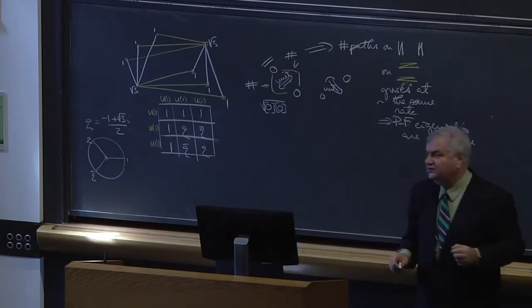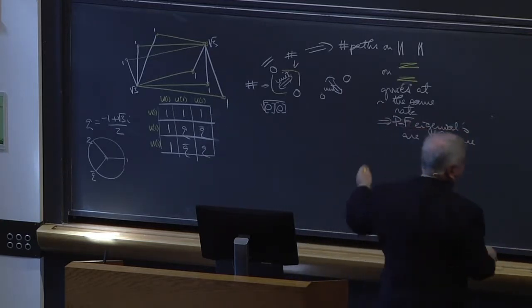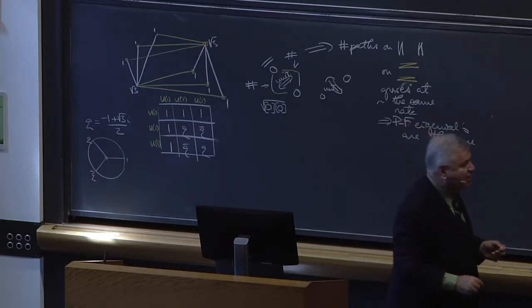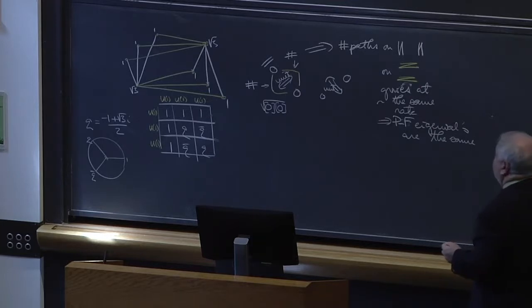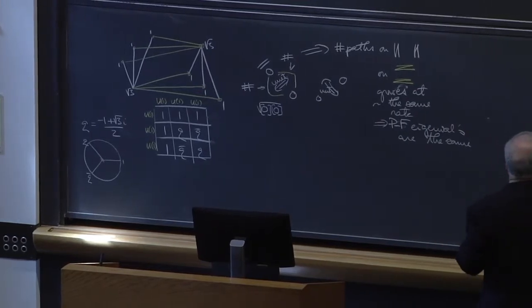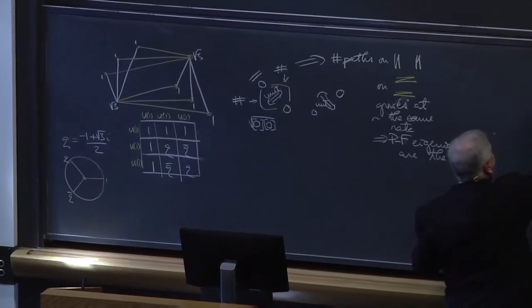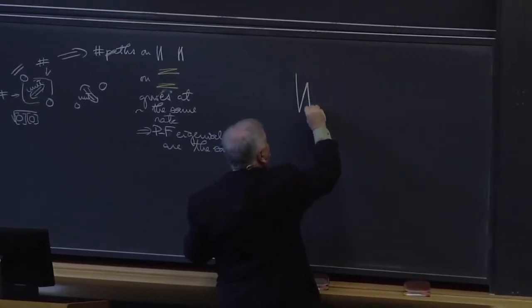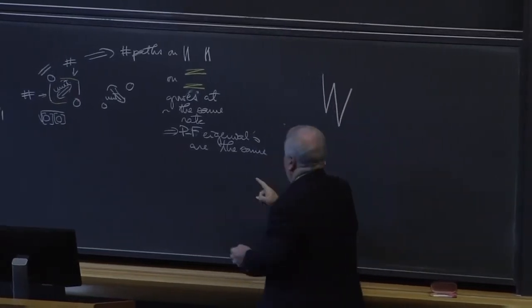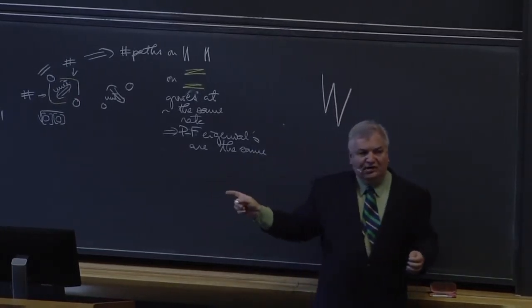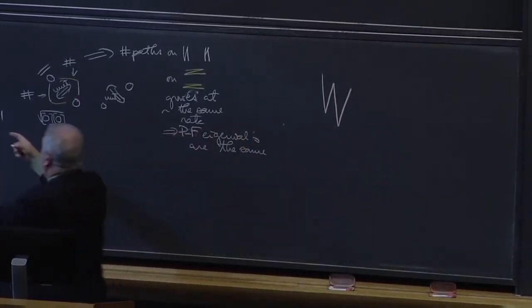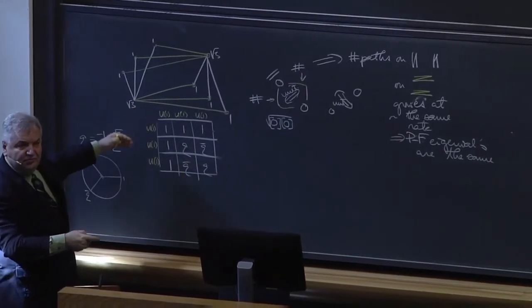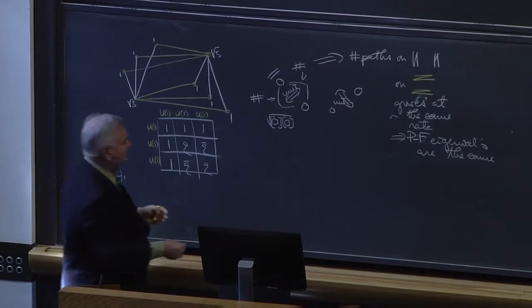This would be the geometry of the graph, and we'll start doing that now. Let's do one more thing: take the graph AN here.